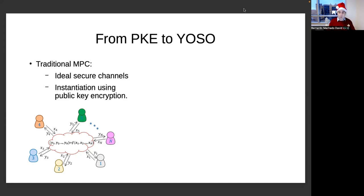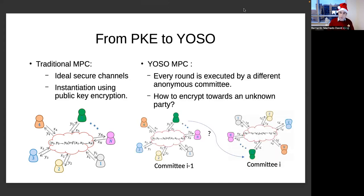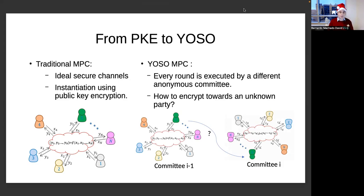You need to be able to allow one committee, who is executing a given round of the MPC protocol, to communicate its state to the next committee, whose identity is unknown until they speak themselves. Obviously, here we cannot simply rely on our traditional public encryption schemes and public key cryptography techniques. We need to be able to encrypt towards an unknown party who is executing a certain role in the next round of this MPC protocol.